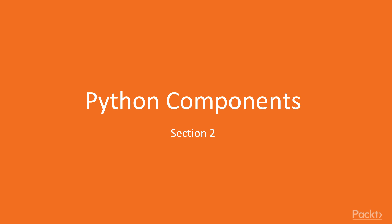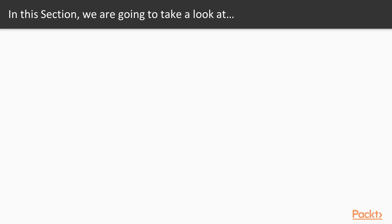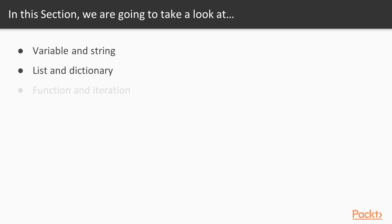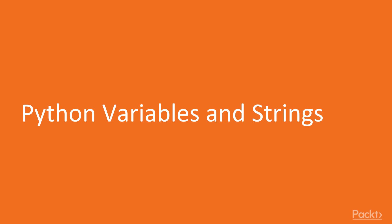Hello and welcome to section 2 of the course: Python components. In this section we are going to take a look at various points. First, we will learn about variables and strings, then lists and dictionaries, functions and iteration, and finally networking and file input/output. So let's start with the first video of section 2: Python variables and strings.